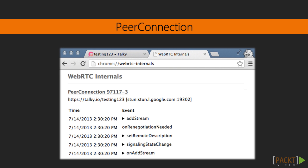Another important element of this API is the class RTCPeerConnection, which supports the connection between the different peers involved in the WebRTC session. It is used to handle efficient streaming of data between two peers.